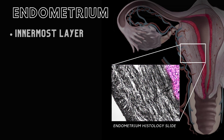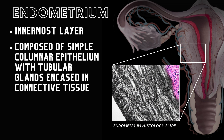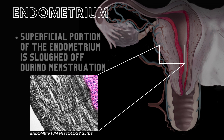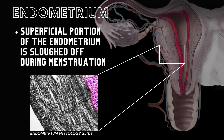The endometrium is the innermost layer of the uterine wall, comprising a superficial layer of simple columnar epithelium. It contains tubular glands encased in cellular connective tissue. The endometrium goes through cyclic changes during the menstrual cycle, thickening to support a potential implantation. In instances where fertilization does not occur, the superficial portion of the endometrium is sloughed off during menstruation.